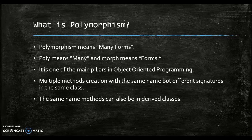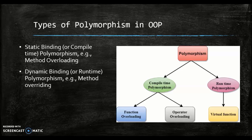Thus, polymorphism in OOP would mean a property of having many forms. The object-oriented programming language processes classes and objects by a single interface. It implements the concept of function overloading, overriding, and virtual functions. Also, it is typically used for implementing inheritance in programming.